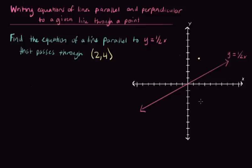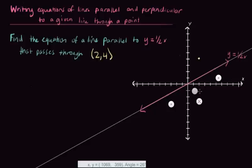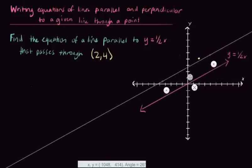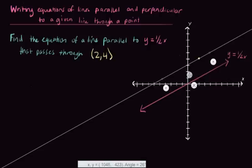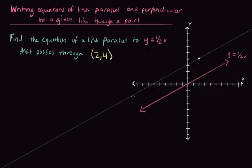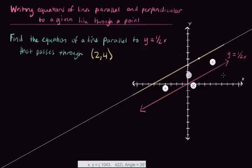Now let's see what this looks like visually before we do any more work on writing the equation. So I'm going to use my ruler tool, and you could use a ruler too to do this. I'm going to use my ruler to draw the line parallel to y equals 1 half x that passes through that point, which is (2,4).